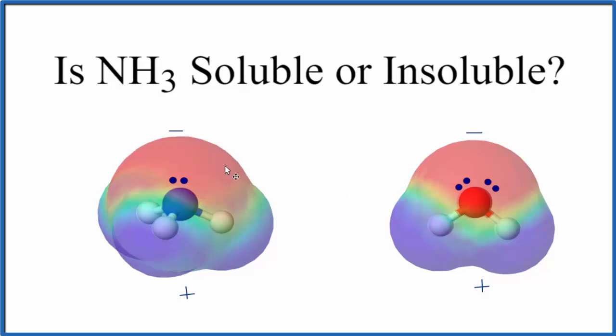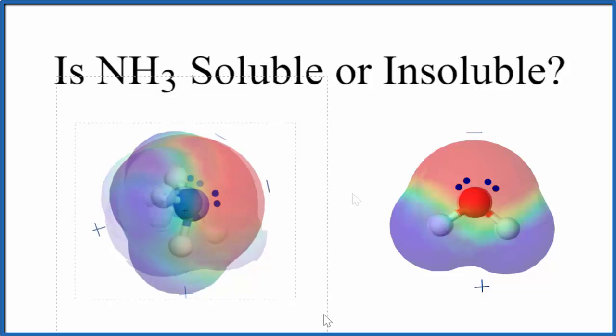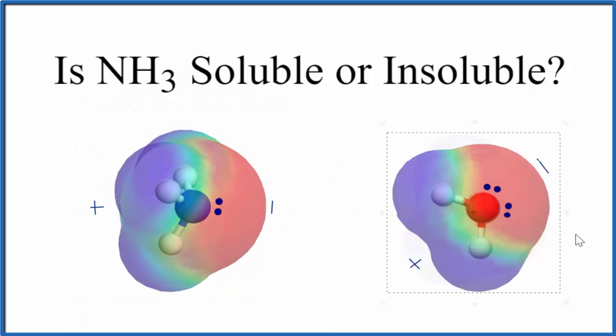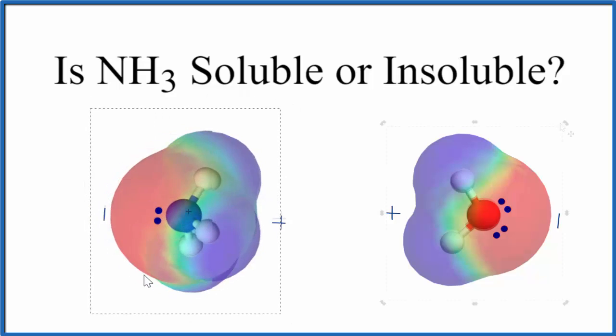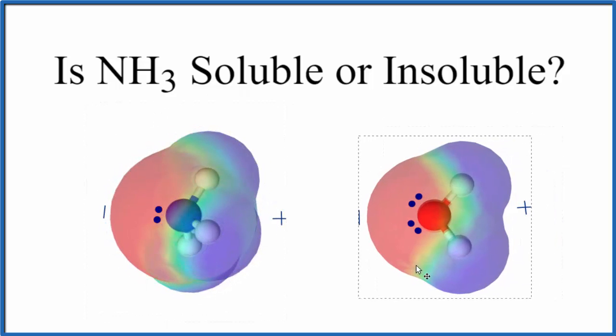Because we have two polar molecules, the positive and negative sides can be attracted to each other. In this case, we have this side of the ammonia molecule attracted to the hydrogens on the water molecule, or the reverse, where the negative side of the water molecule is attracted to the positive side of the ammonia molecule.